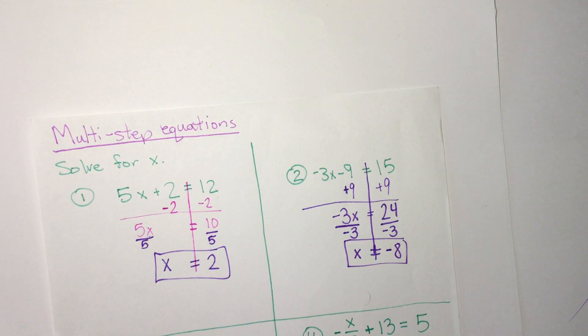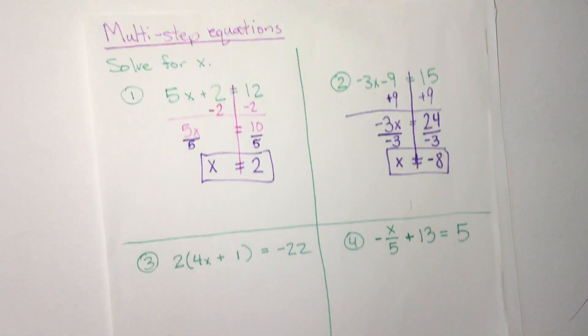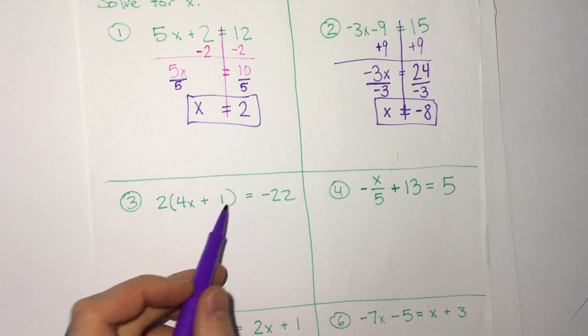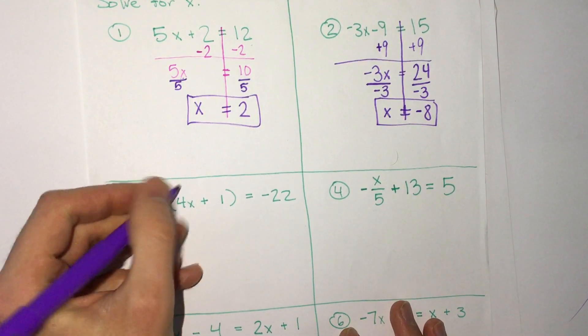So hopefully if you practiced that, that's what you got. Now let's look at some different examples here. Here is one where we have parentheses. So we could do a number of different things to start this, but I think the easiest way is just start by simplifying using the distributive property.